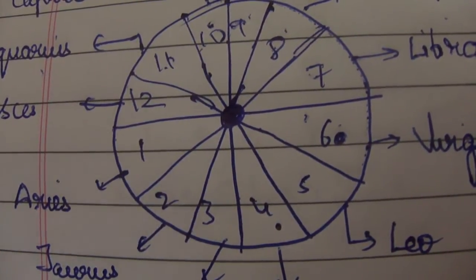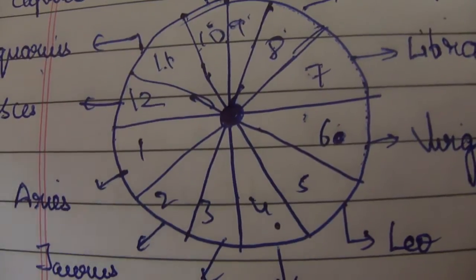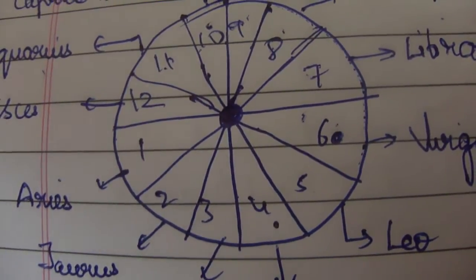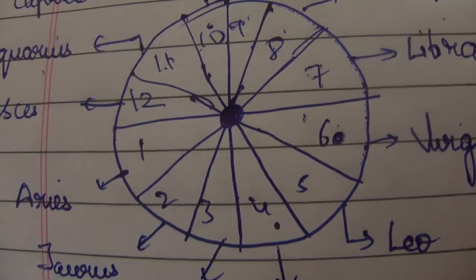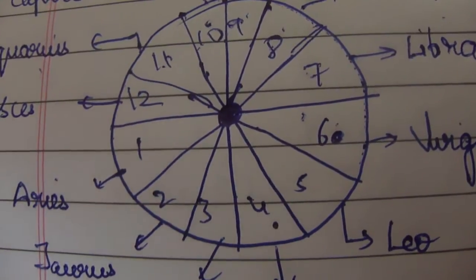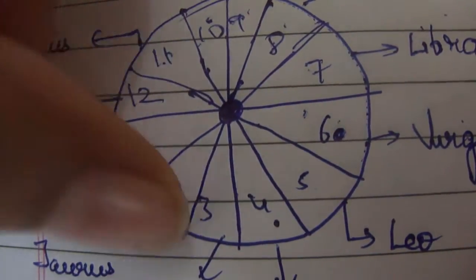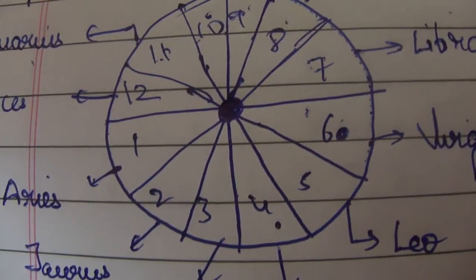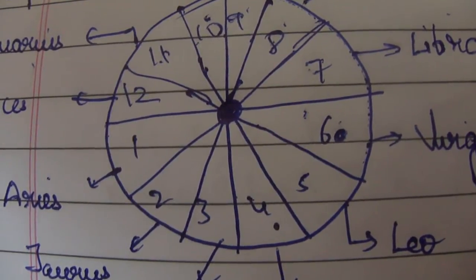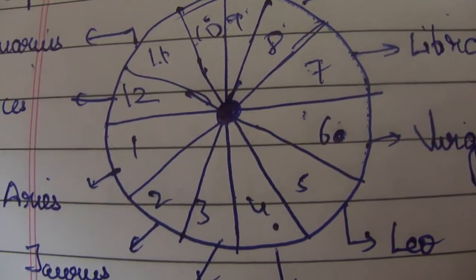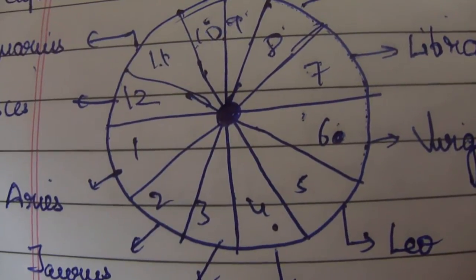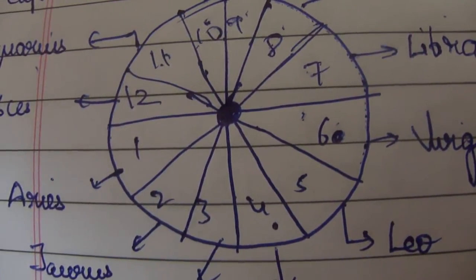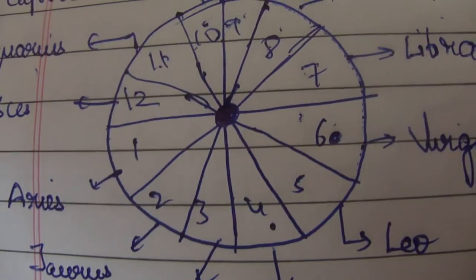In each of the three houses - that are 12th, first, and the second. So when Saturn is moving over the 12th, first, and the second, these are the houses with respect to your moon sign. That means Saturn stays in each sign for two and a half years.